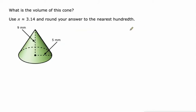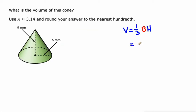Volume of a cone. We talked about volume of cylinders and prisms being the area of the base times the height of the prism. A cone is actually a third of a cylinder. So there's our formula: one third of the area of the base times the height. But a cone always has a circular base, so we say one third pi r squared times h. That's the formula we'll use for every example.